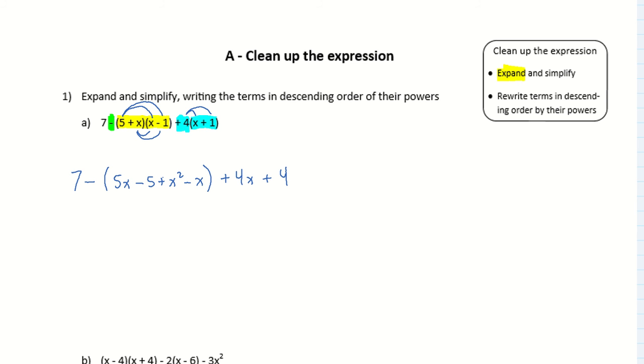Okay, so now that we've expanded everything, it's a matter of simplifying. Okay, so here, when I remember that I'm subtracting everything in these brackets, when I remove the brackets then, I have to remember, well you can almost think about it as like you're distributing, subtracting to each of those terms. So, I'll be subtracting 5x, I'll be subtracting negative 5, so negative times negative is plus 5, negative times positive is minus x squared, negative times negative is plus x. So when I remove the brackets, I sort of distribute the negative to each of those things.